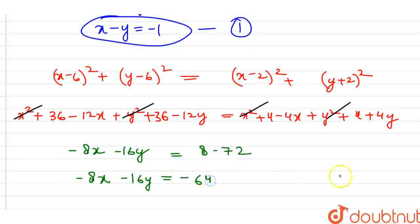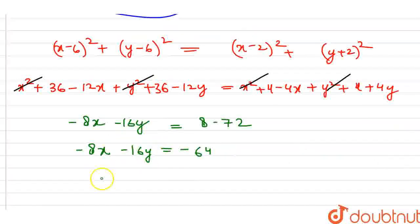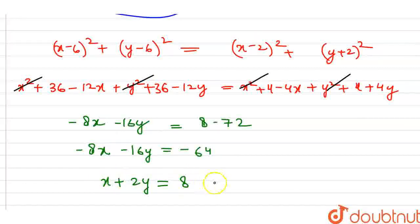Canceling x square and y square, we get minus 12x minus 12y plus 72 equals minus 4x plus 4y plus 8. Simplifying, minus 8x minus 16y equals minus 64. Dividing by minus 8, x plus 2y equals 8. This is equation number 2.